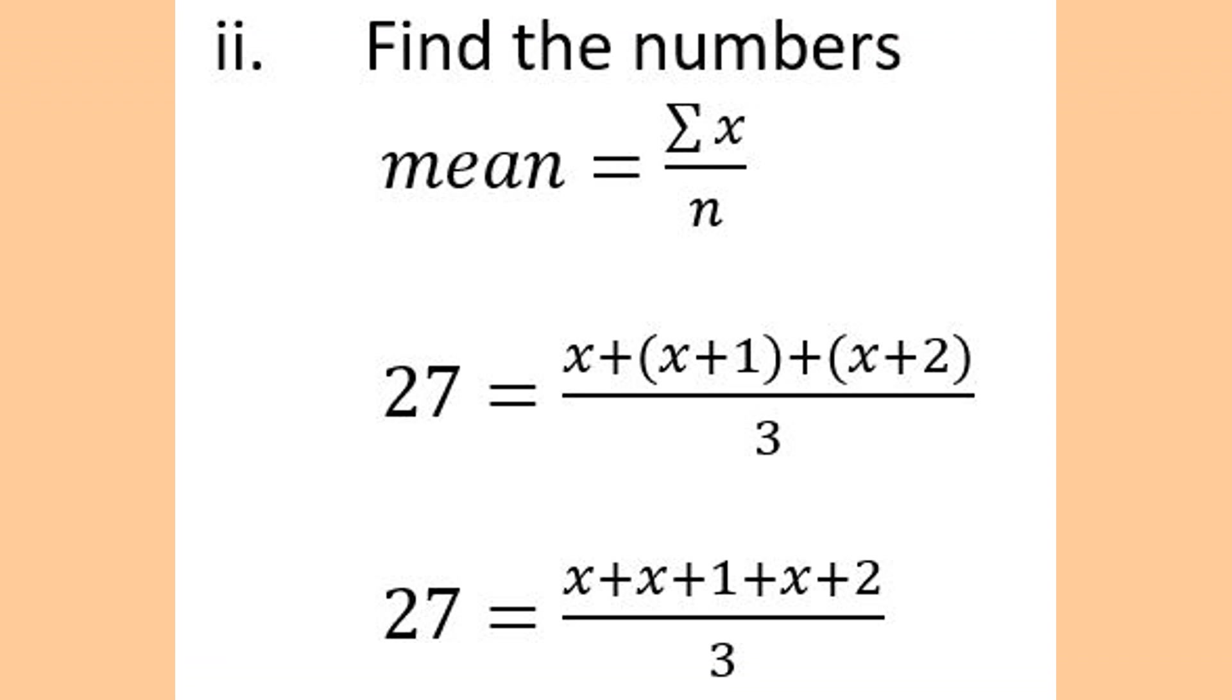Use the array or the mean formula to find these three consecutive numbers. Mean formula states mean equals sum of x divided by n, or we can say mean equals sum of scores divided by number of scores.